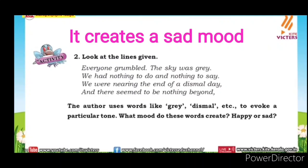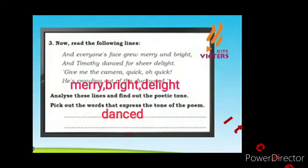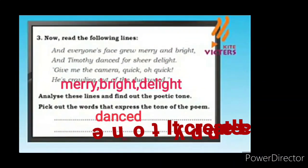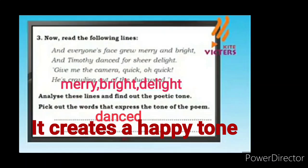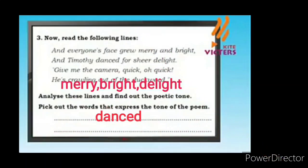It creates a sad mood. Now read the following lines: 'And everyone's face grew merry and bright, and Tim T danced for sheer delight. Give me the camera, quick, quick, quick — he's crawling out of the duckweed.' Analyse these lines and find out the poetic tone. The words that express happiness are: merry, bright, delight, dance — it's a happy feeling expressed.